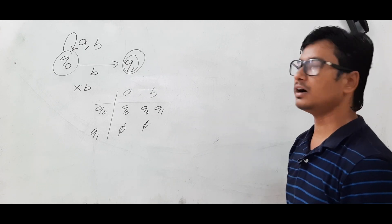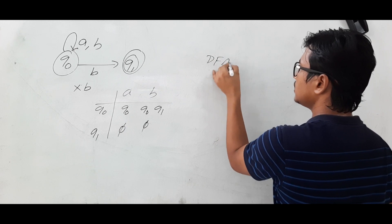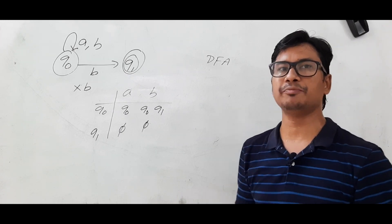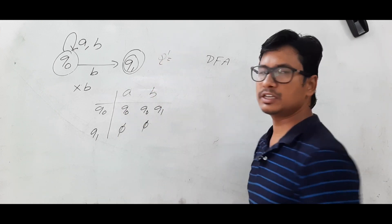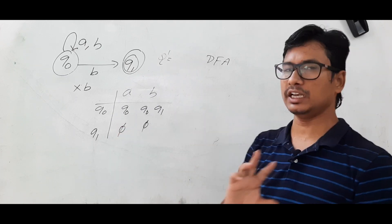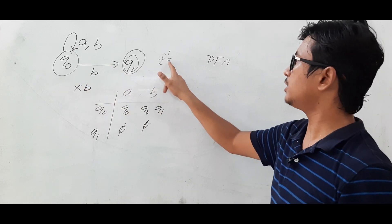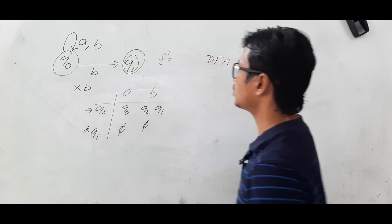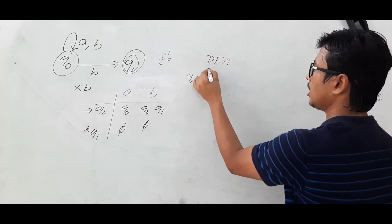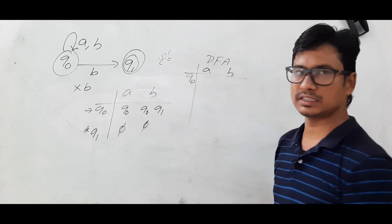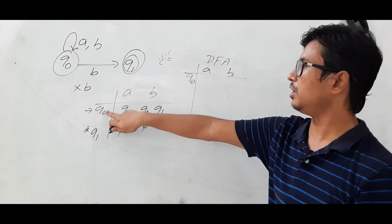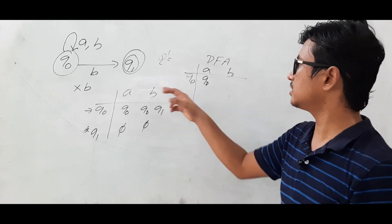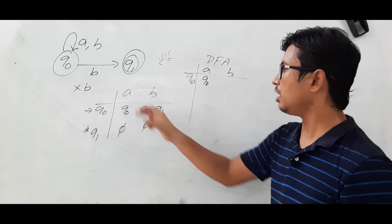Now I will find the transition table for the DFA. Remember step one: the set of states in the DFA is represented as Q', initially empty. The initial state of the NFA, Q0, is added to Q'. Q0 is the initial state and Q1 is the final state. For step two, we find transitions from Q0: Q0 on A goes to Q0, and Q0 on B goes to Q0 and Q1 in the NFA.